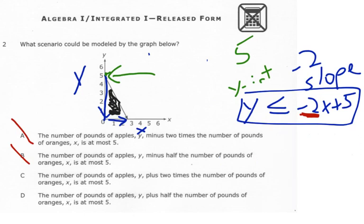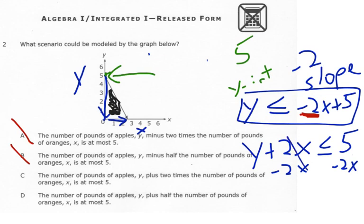Okay, look at C. The number of pounds of apples y plus 2 times the number of pounds of oranges x is at most, so less than or equal to 5. Again, I'm solving for y, so minus 2x minus 2x. And y is going to be less than or equal to negative 2x plus 5.